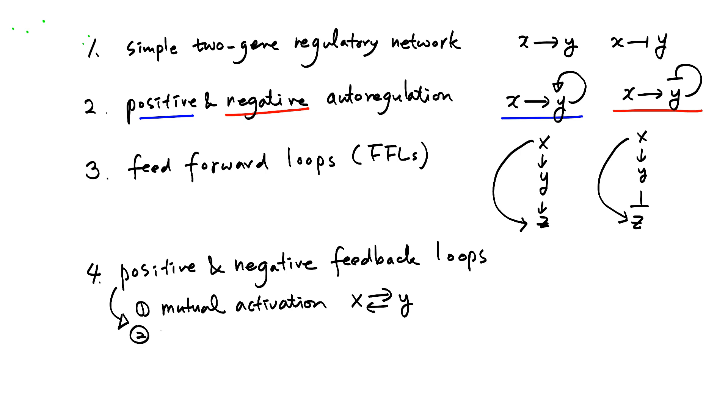We also have mutual inhibition: X inhibits Y, and Y inhibits X. This is also positive feedback because X is activating itself by inhibiting the inhibition by Y.